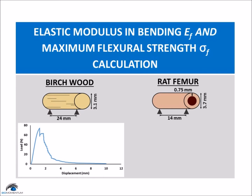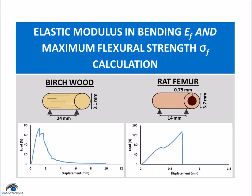The span length is 14 millimeters, the diameter is 3.7 millimeters, and the cortical wall thickness is 0.75 millimeters. Here is the measured load-displacement curve of the rat femur sample. From these values, the elastic modulus in bending and the maximum flexural strength can be obtained.